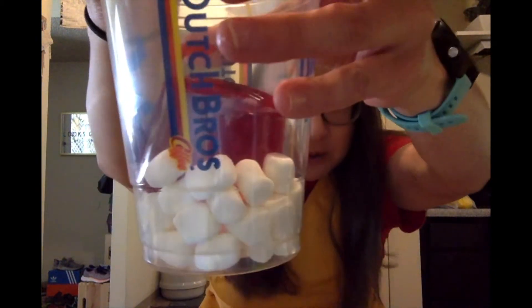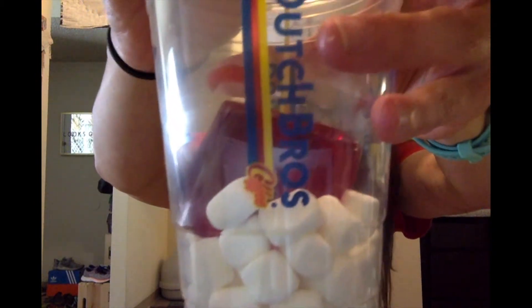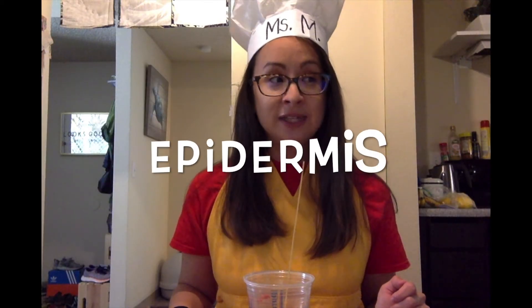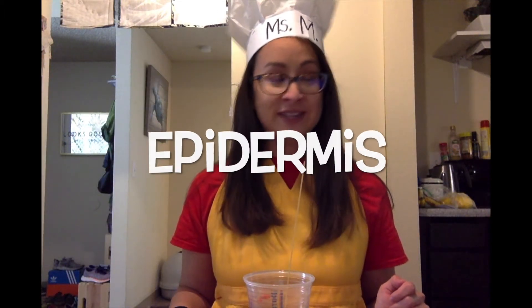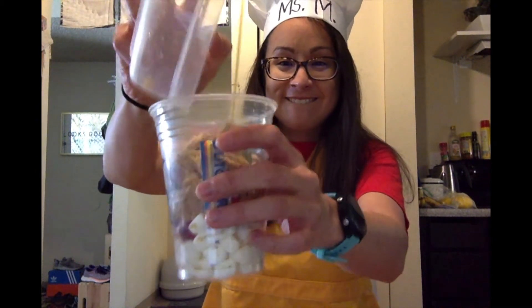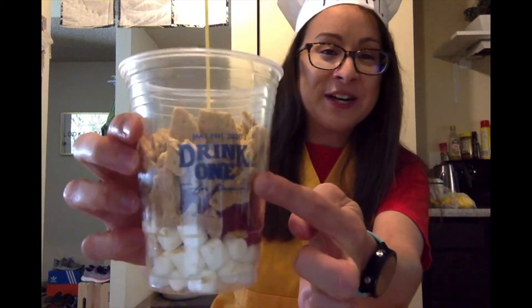To represent a hair follicle, I am going to use a spaghetti stick and stick it right into the dermis. There's your dermis. The last layer that makes up the skin — the top layer of the skin that we literally see — is what we call the epidermis. The epidermis is a relatively thin, tough outer layer of the skin. To represent the epidermis, we will use graham crackers. There's your epidermis.